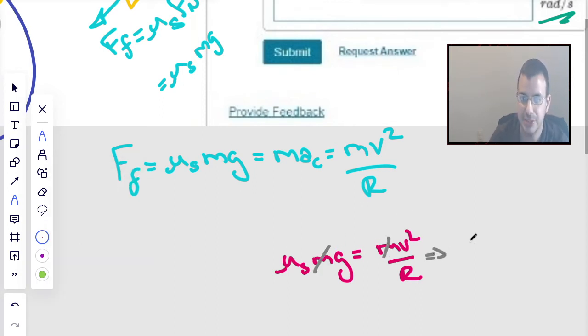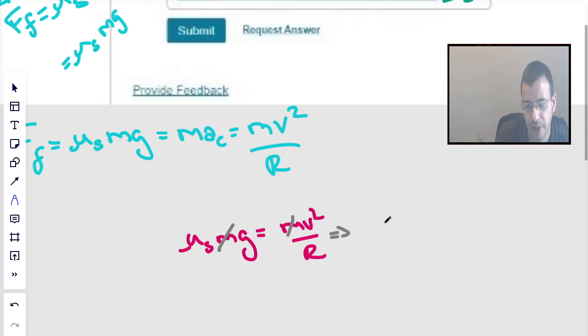And we want to find the speed. Now this is linear speed, so we'll probably have to convert it later, but we totally can. Not a big deal. v² equals coefficient of static friction times radius times gravity.